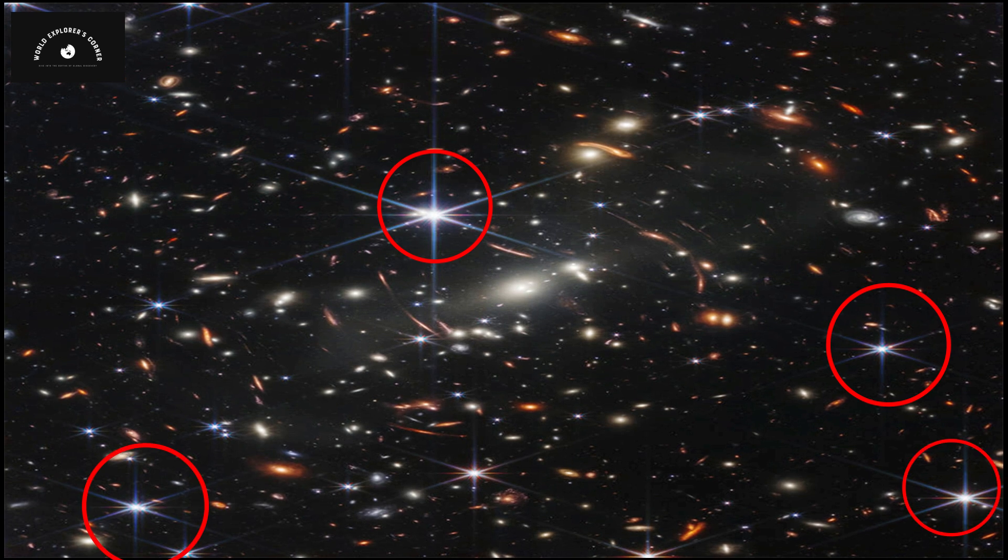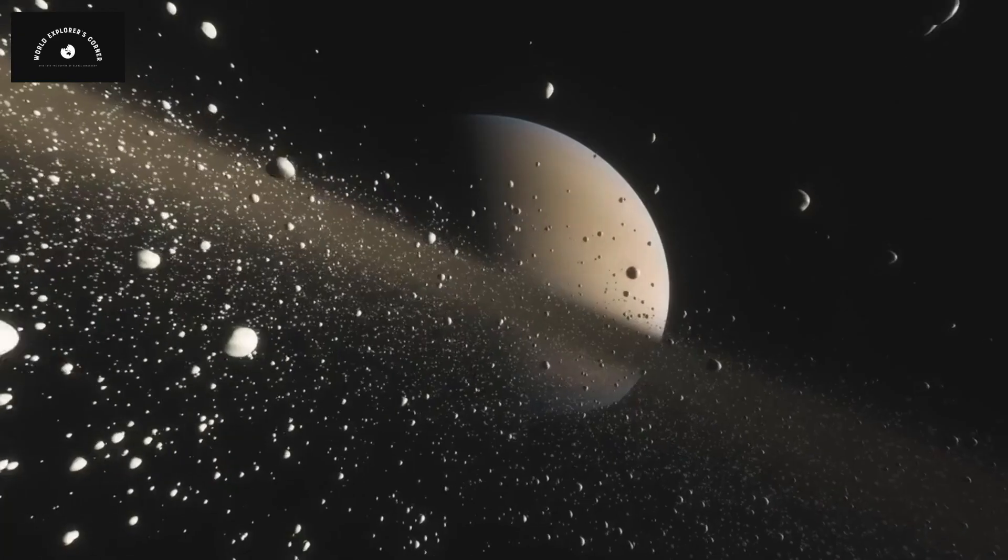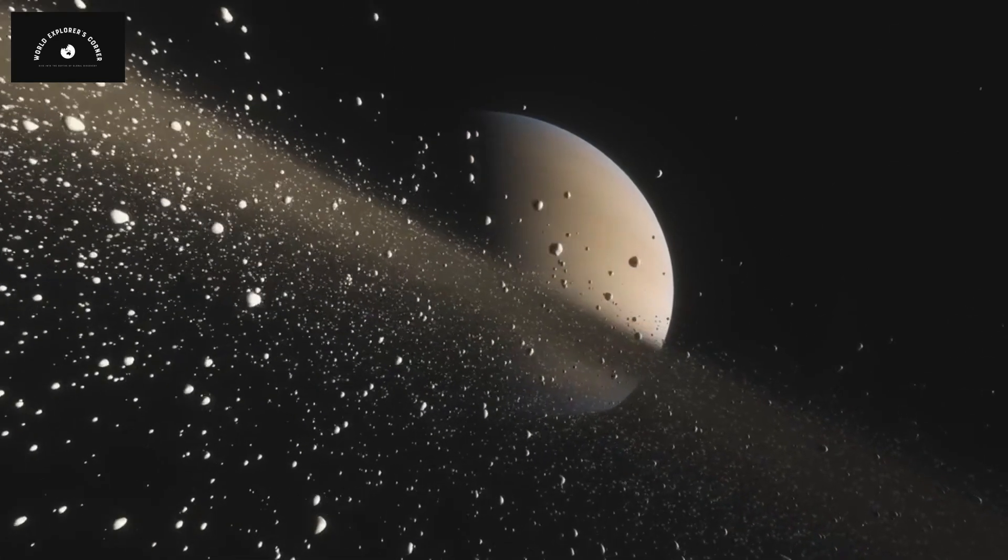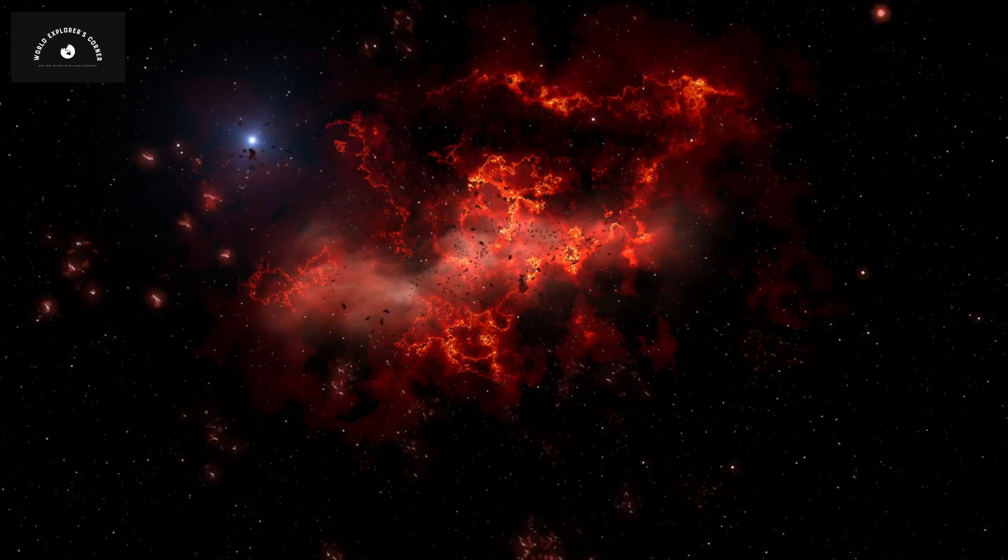The blue shaded galaxies in this photo indicate that they have matured significantly and contain many stars and planets. The red shaded galaxies suggest that they have a lot of dust and are still forming new stars.